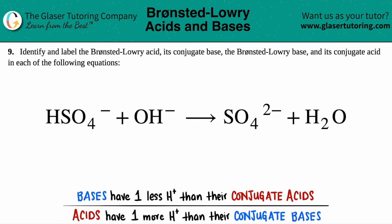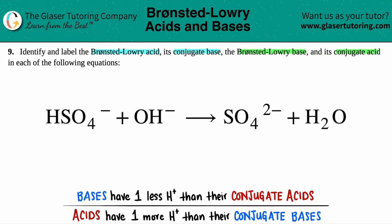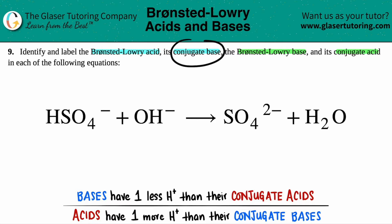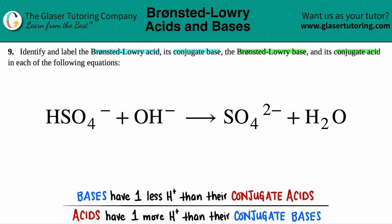Number nine: identify and label the Bronsted-Lowry acid, its conjugate base, the Bronsted-Lowry base, and its conjugate acid in each of the following equations. So we have to find the Bronsted-Lowry acid and base and the conjugate acid and base in HSO4⁻ plus OH⁻, which yields SO4²⁻ plus H2O.